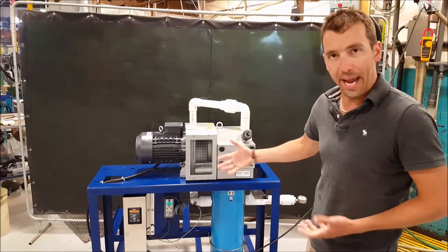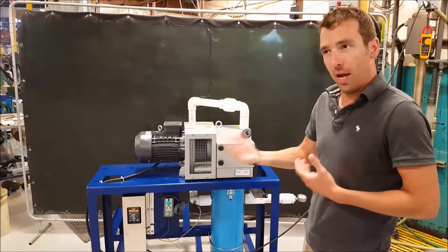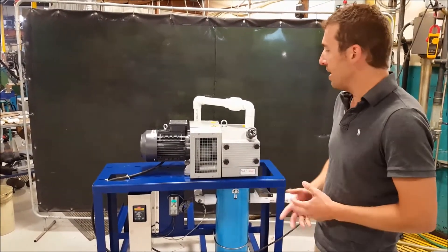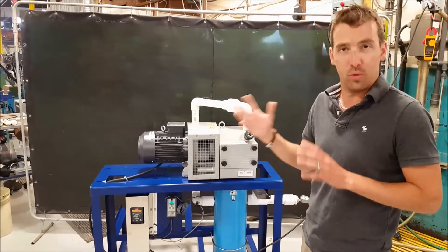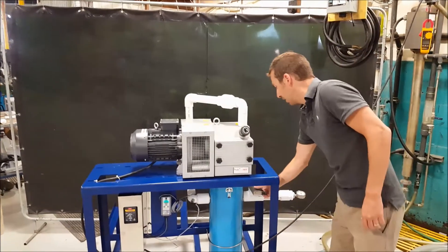I'm just going to create a leak, so the pump will speed up to give us more CFM capacity. And as soon as it reaches the demand, that 20 inches of mercury, it will slow down again. Let's take a look.